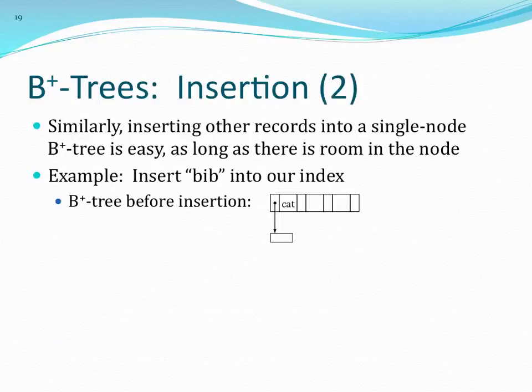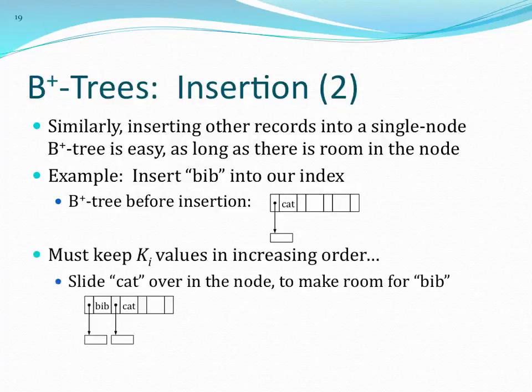As long as there's room in the node, we go ahead and insert another value. Adding 'bib' to the index: I have the constraint that keys need to be in increasing order, so I slide 'cat' to the right and put 'bib' in front of it. Now our root node has 'bib' and 'cat'.